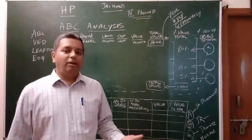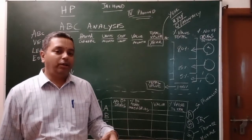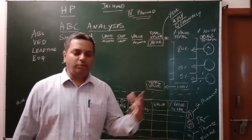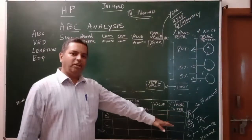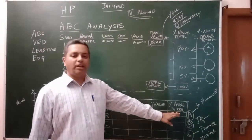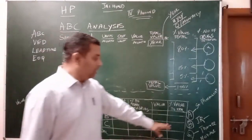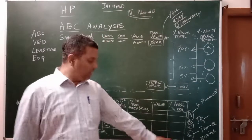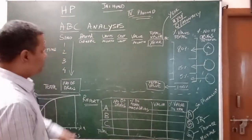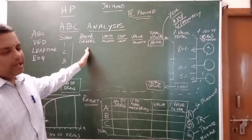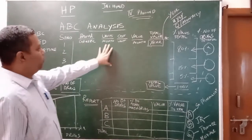We need to determine how many drugs fall under each category, which requires maximum attention from the senior pharmacist. In ABC analysis, class A drugs require the most attention from a senior pharmacist. The brand name or generic name is used in ABC categorization.